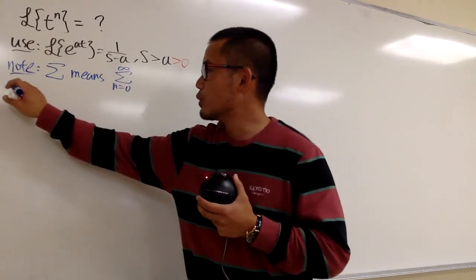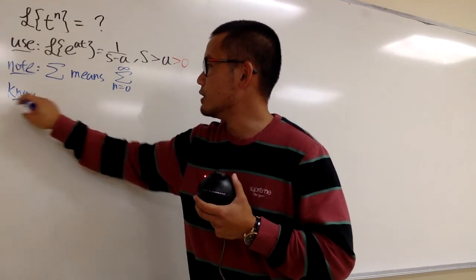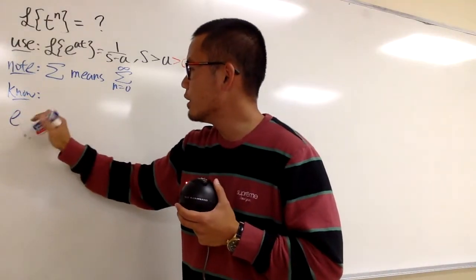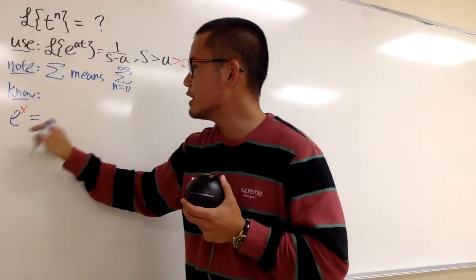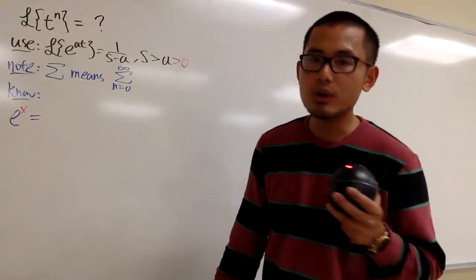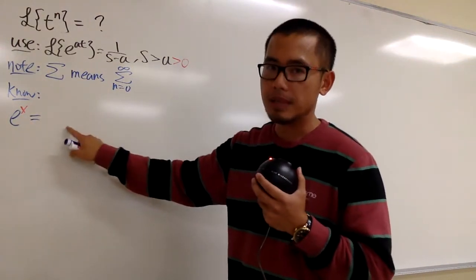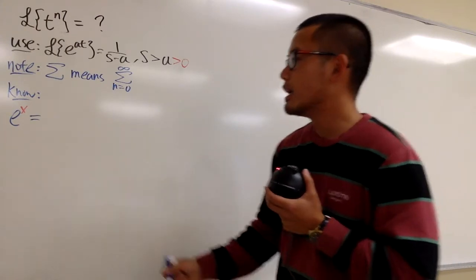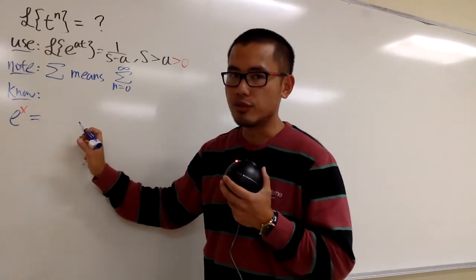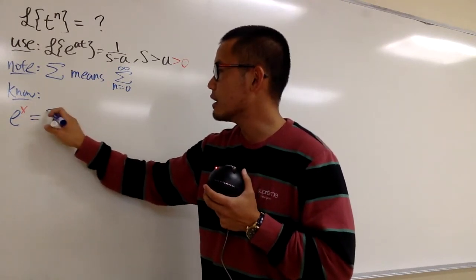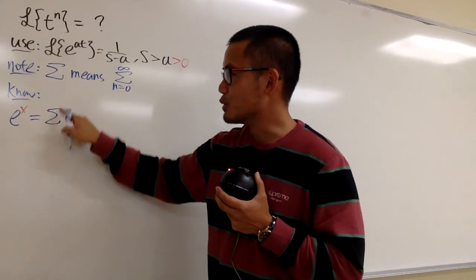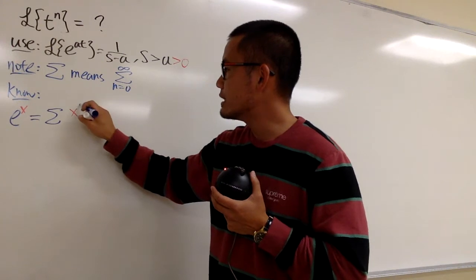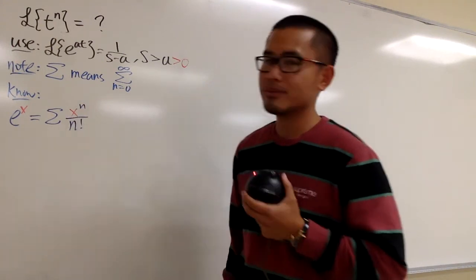Let's look at the Taylor series for e to the x, centered at 0. It's going to be 1 plus x plus x squared over 2 factorial, plus x to the 3rd power over 3 factorial, and so on. In sigma notation, e to the x equals the summation when n goes from 0 to infinity of x to the nth power over n factorial, and this is true for all x.